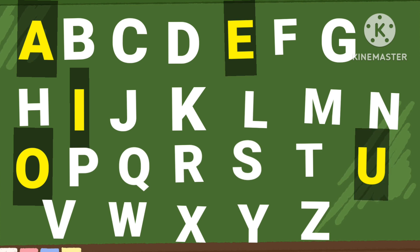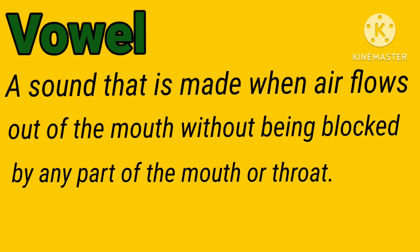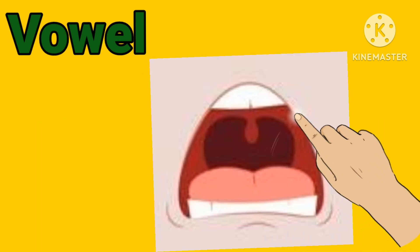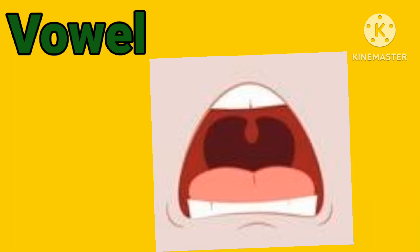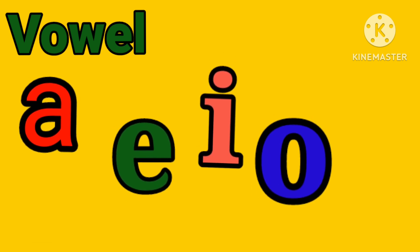The rest of the letters are consonants. However, there is an exception in the case of the letter Y — it can act both as a consonant and a vowel. What is a vowel? A sound that is made when air flows out of the mouth without being blocked by any part of the mouth or throat. That means when your tongue is positioned as far as possible from the roof of the mouth, as in the sound of A, E, I, O.